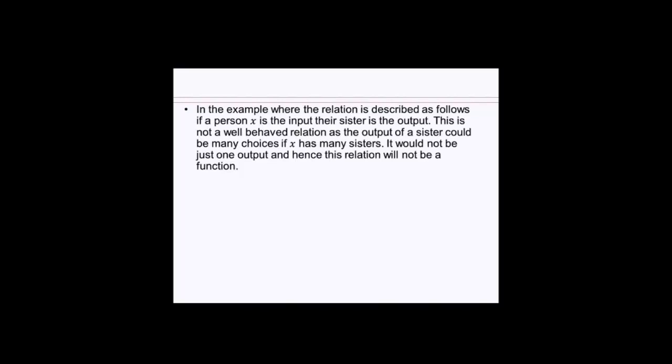So name versus height would be a function. An example of the relationship before was name of a person with its heights. But now let's take a look at another relation. Suppose x, the person x is the input, and their sister is the output. This would not be a well-behaved relation, and so we would not call it a function. Why is that? Because one person can have several sisters. And so you don't have a unique sister associated to that person necessarily. So that's why this relation would not be a function.